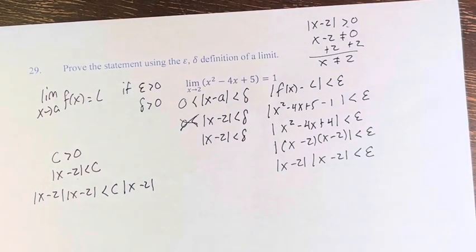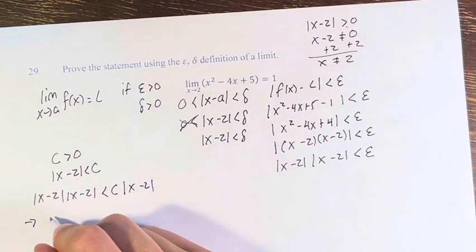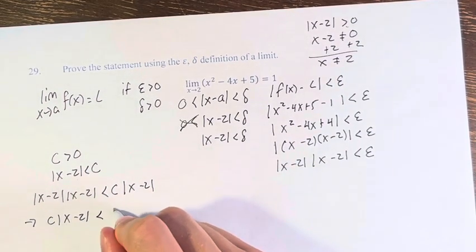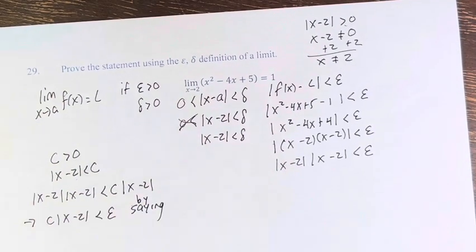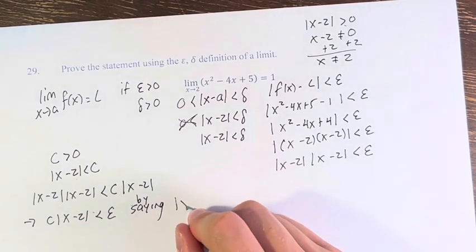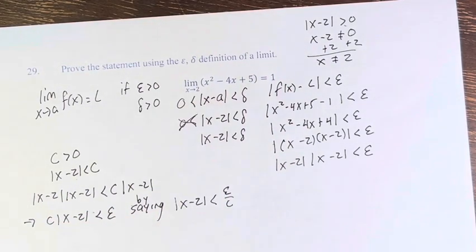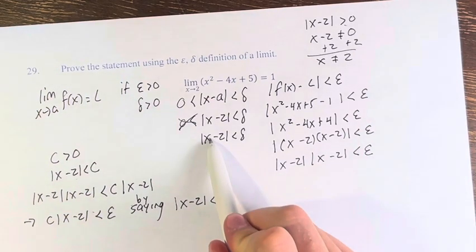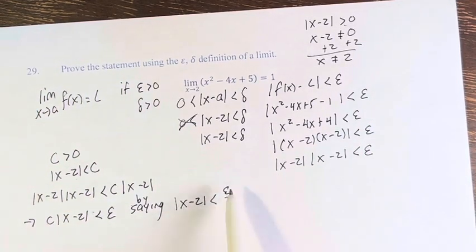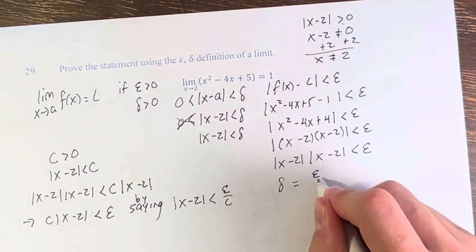And we can make it so that c times the absolute value of x minus 2 is less than epsilon by saying that the absolute value of x minus 2 is less than epsilon over c. Again, we don't need to know what c is, we're just saying these are the rules by which we have created this c. And therefore x minus 2 is less than delta, x minus 2 is less than epsilon over c, therefore delta equals epsilon over c.